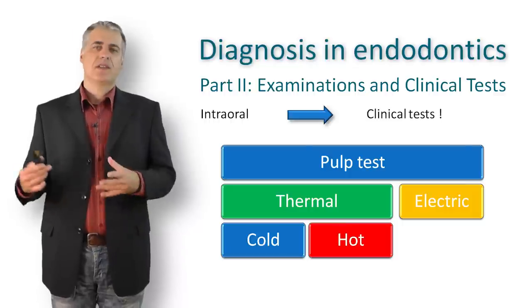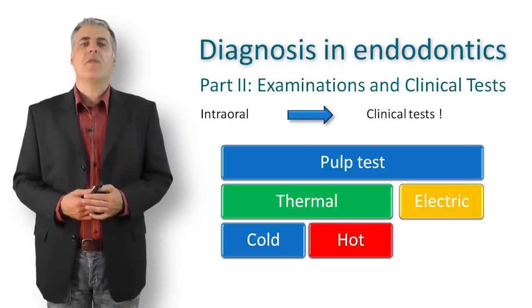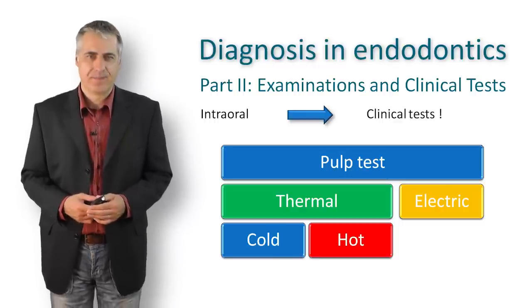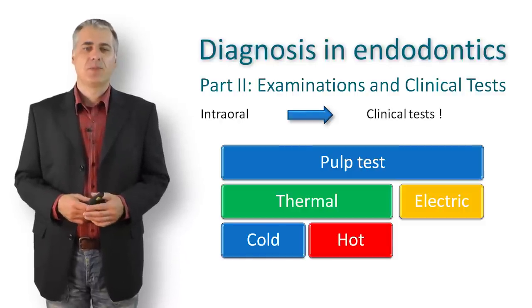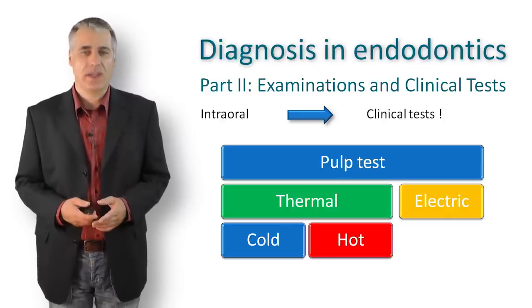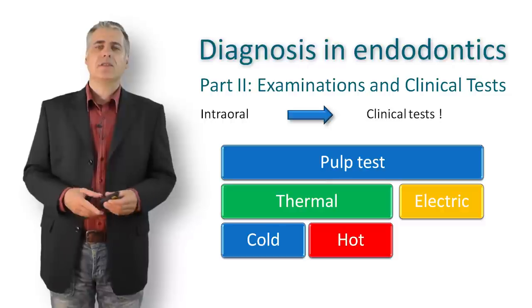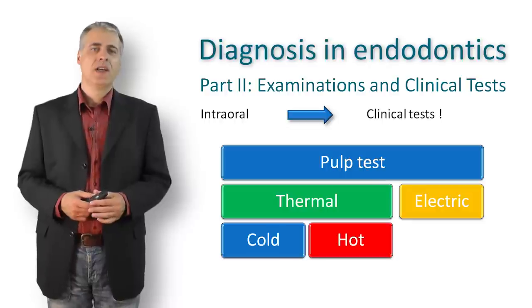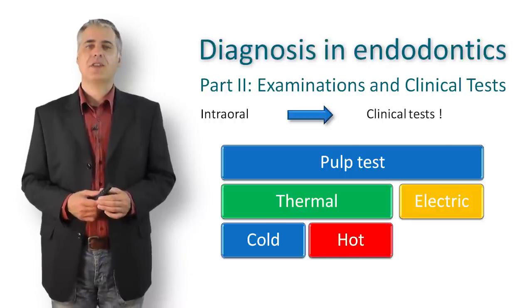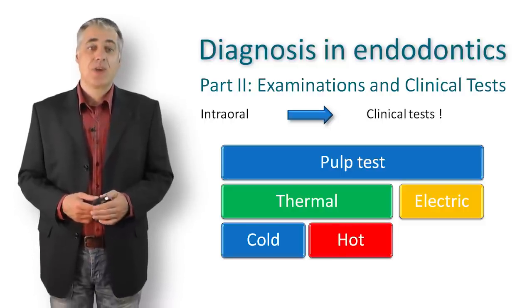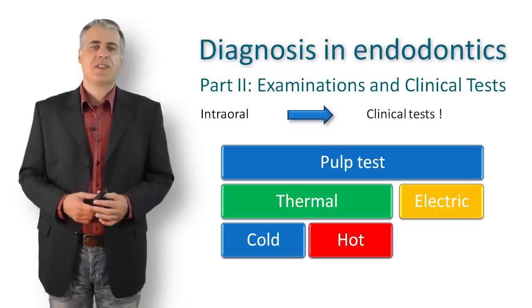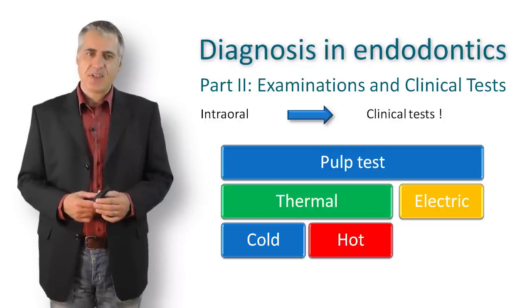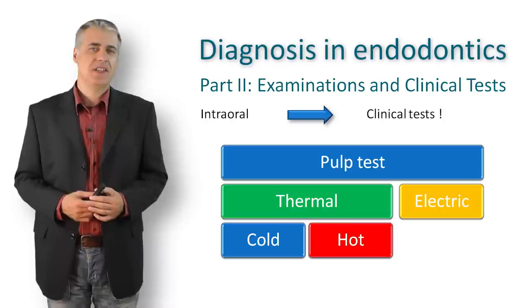With both cold and electric tests, we are only able to determine viable nerve fibers, which is only an indirect clue that a tooth could be vital — it says nothing about fluid supply, which, if present, classifies a tooth as vital. To summarize, the accuracy for the cold test is 86%, for the electric pulp test 81%, and for the heat test 71%, according to a study by Peterson in 1999. The cold test is therefore the most reliable method in daily dental practice to identify vital pulp cells.